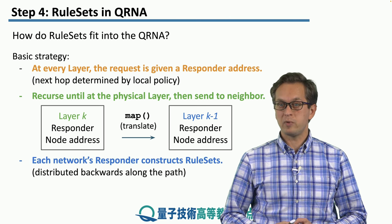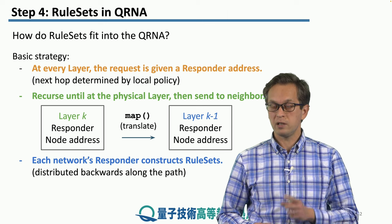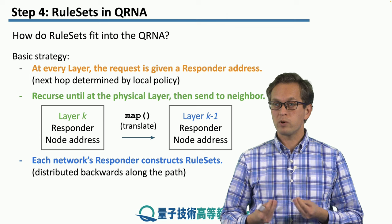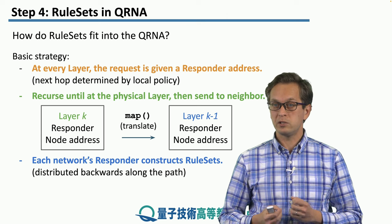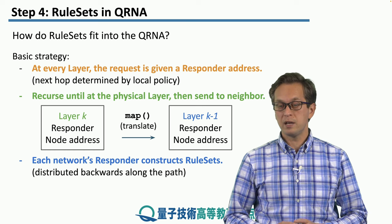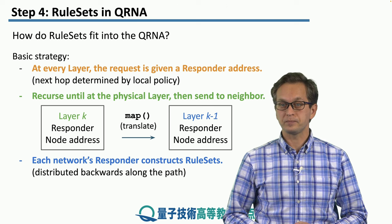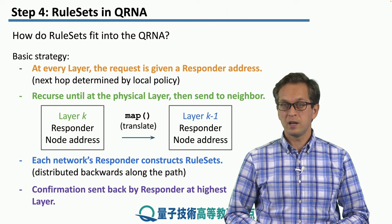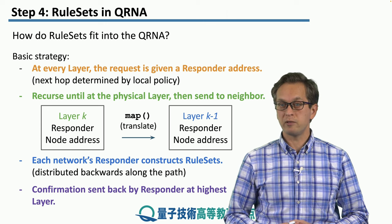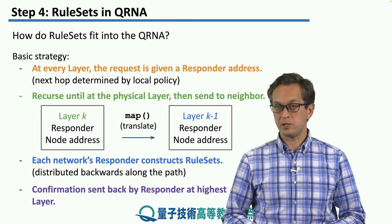Each network's responder constructs the rulesets. So now the rulesets are not constructed in one central node like before. Because we have multiple responders, we're going to have multiple nodes that are actually generating the rulesets for the entire connection. They are distributed backwards along the path, in a similar way as for the single-layer ruleset distribution. Once the connection request reaches the final responder at the highest layer, that responder sends back a confirmation of the connection.